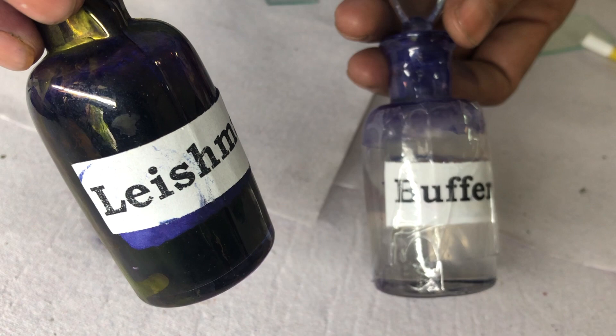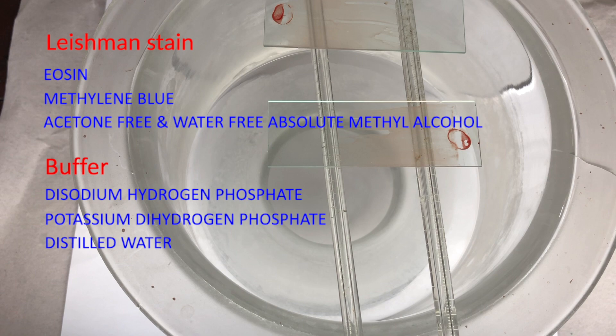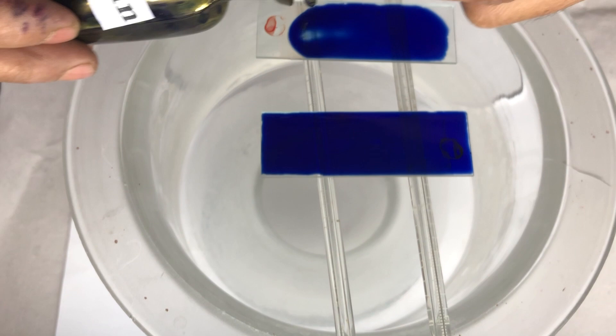For staining the slide, we would be using Leishman stain and buffer solution. For staining, we keep the blood film slide on a washbasin and then we pour Leishman stain onto that film so much so as to cover the film fully.